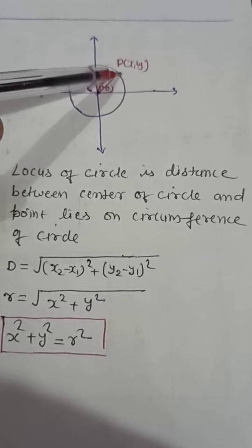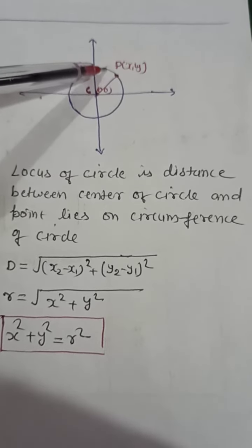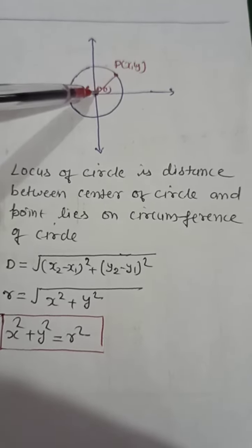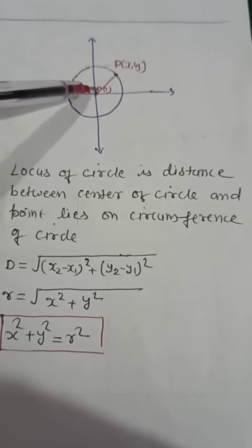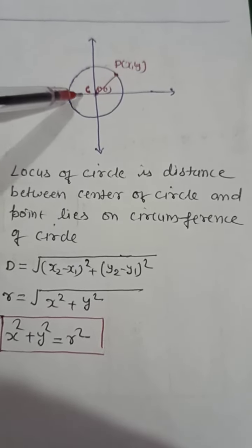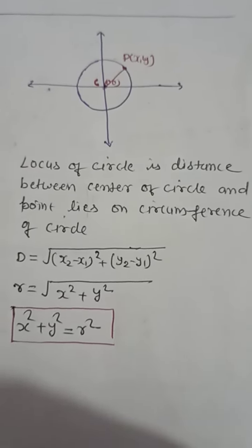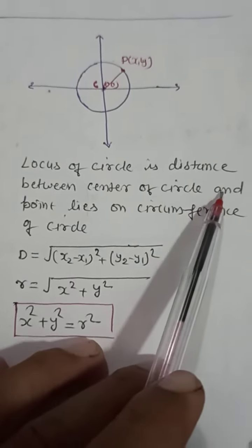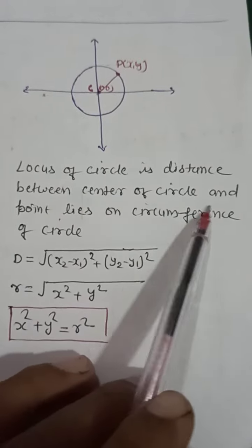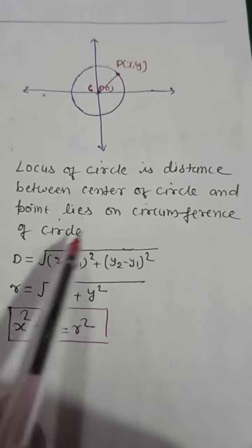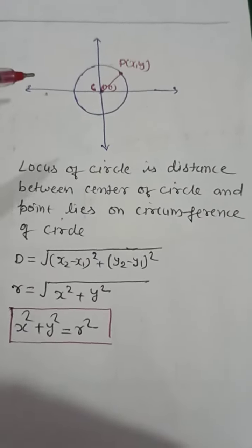You can see that the locus of the circle is the distance from the circumference to the center, which is equal. So you can find it by the distance formula because this is the locus of the circle. The locus of circle is the distance between the center of the circle and a point that lies on the circumference of the circle.